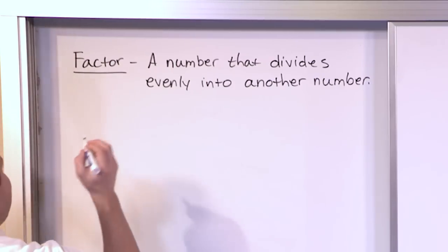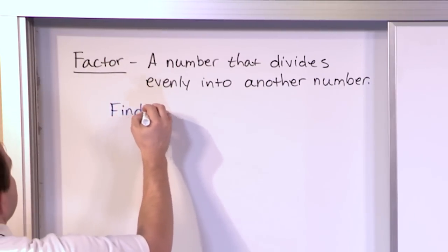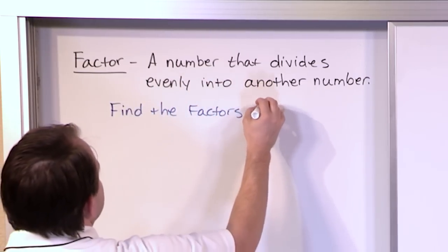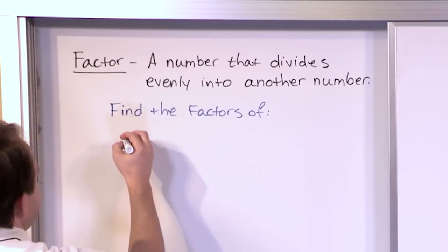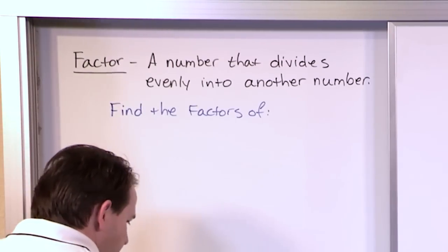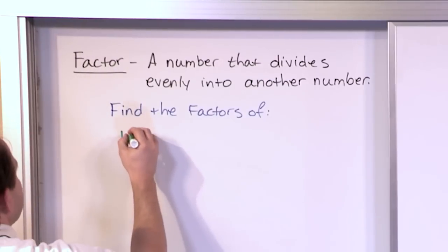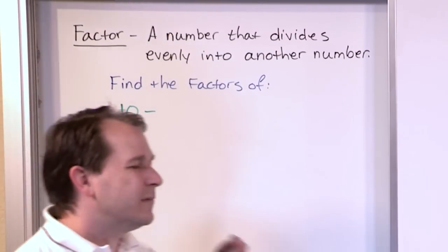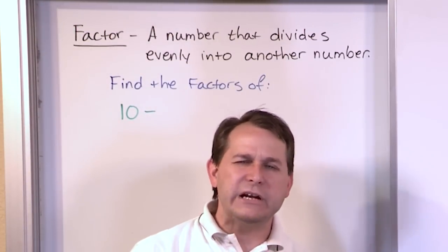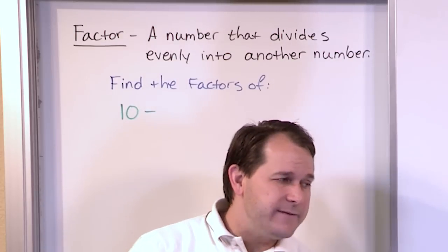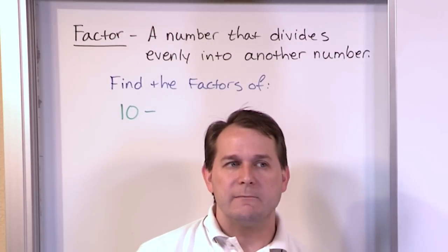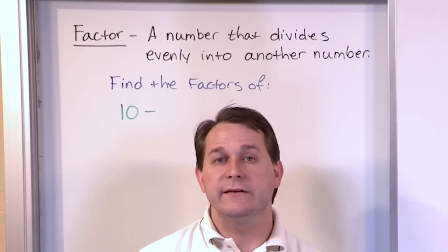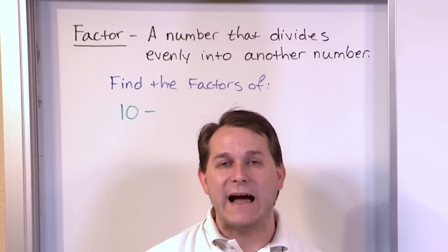So if I want to find the factors of a number, let's say the number 10 — this is how we would do it. If I'm trying to find the factors of 10, I'm literally trying to write down a list of every number that will divide evenly into 10 without any remainder or anything left over. If a number can divide evenly into 10, then we say it's a factor of the number 10.